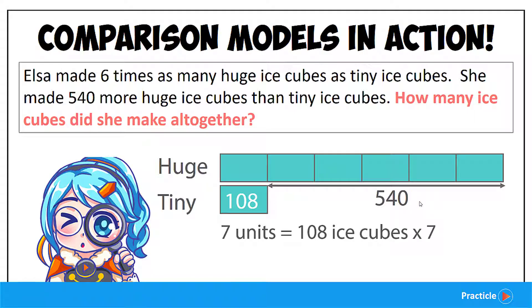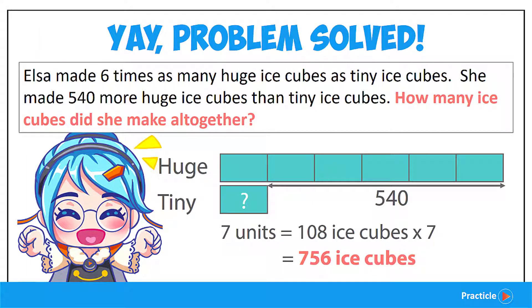So 108 times 7 is 756. And that's how we know that Elsa makes 756 ice cubes altogether. Problem solved!